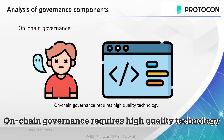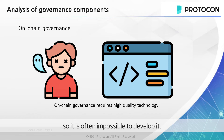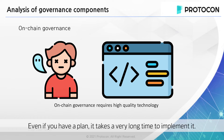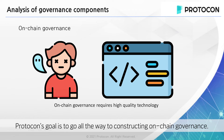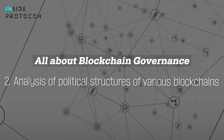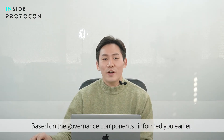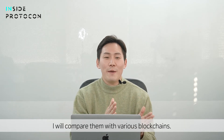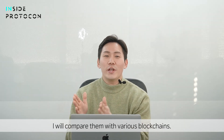However, on-chain governance is actually very difficult to implement technologically, so it is often impossible to develop. Even if you have a plan, it takes a very long time to implement it. Protocon's goal is to go all the way to constructing on-chain governance. Based on the governance components I've informed you about, I will compare them with various blockchains.